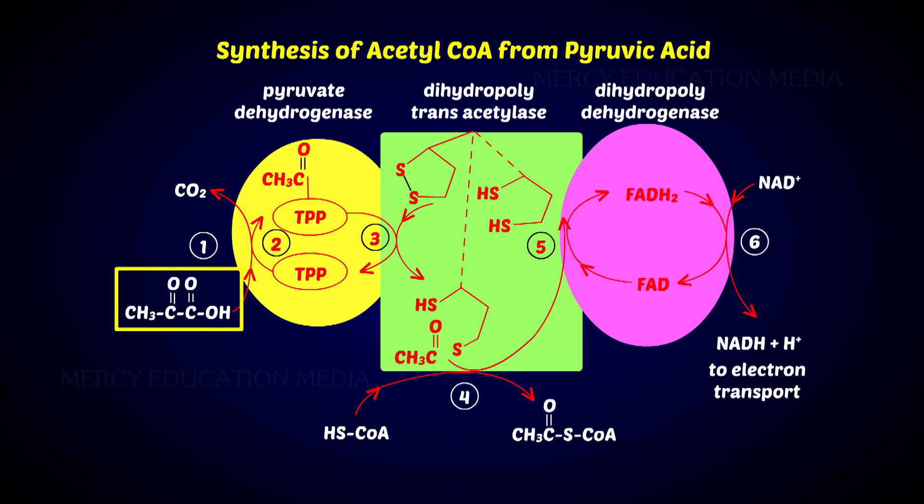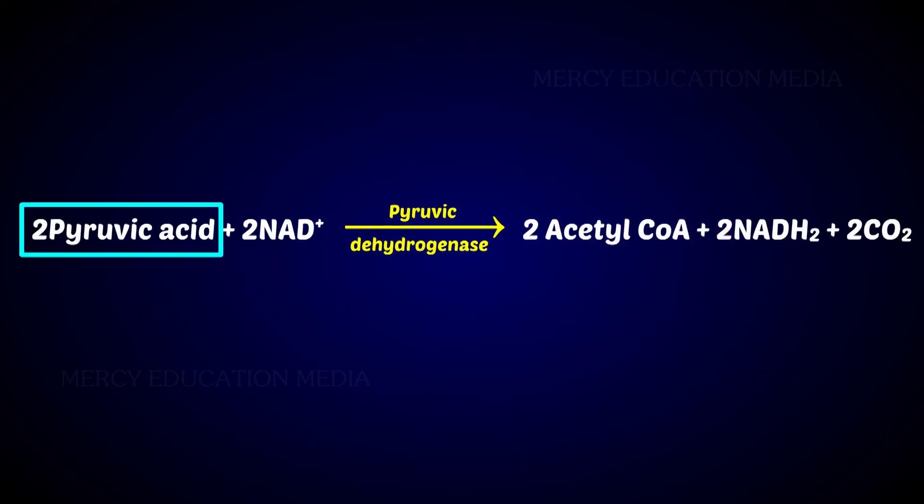Oxidative decarboxylation of pyruvic acid occurs only under aerobic conditions. Under anaerobic conditions, pyruvic acid is reduced either to lactic acid or ethyl alcohol, depending on the nature of the organism.